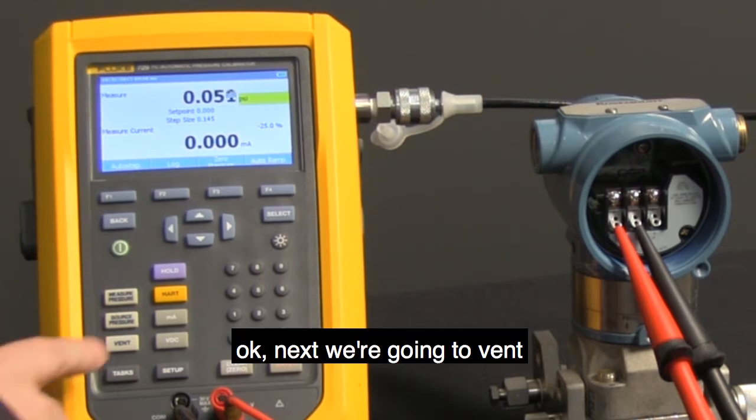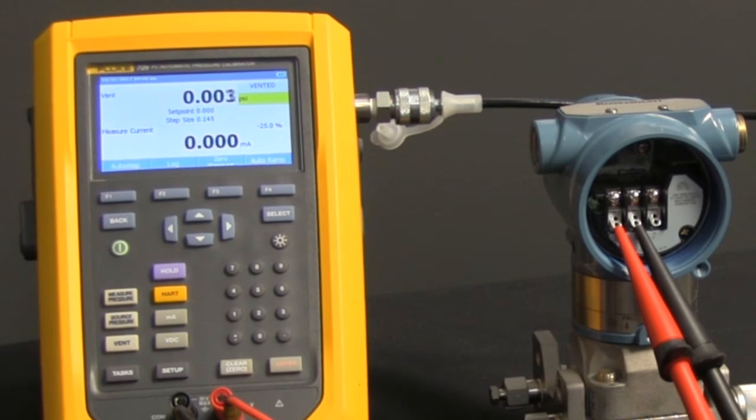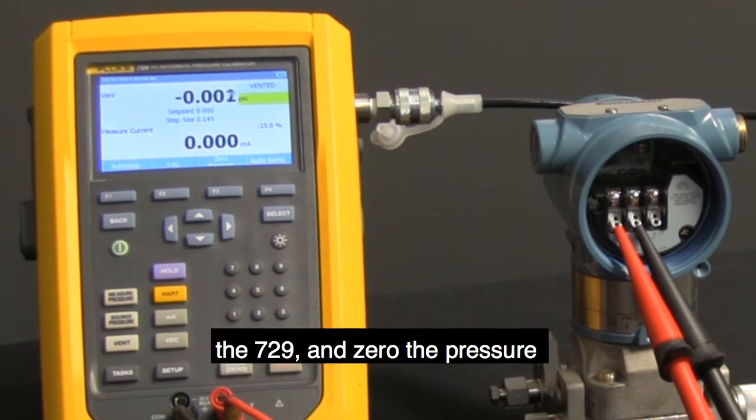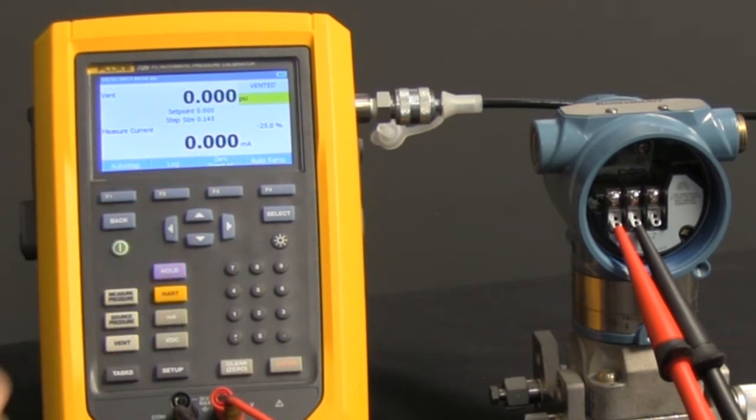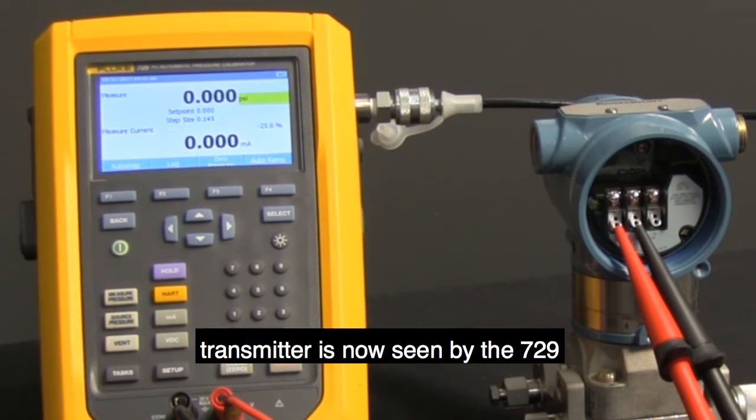Next, we're going to vent the 729 and zero the pressure. Then, we're going to go to Tasks and select the type of transmitter.